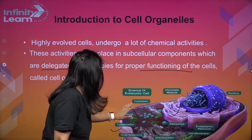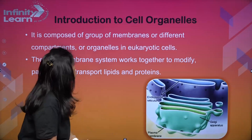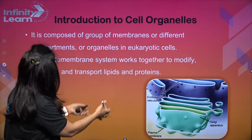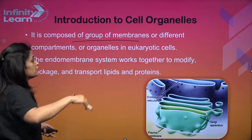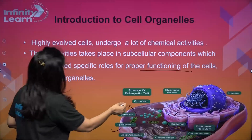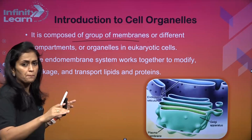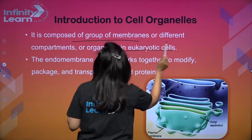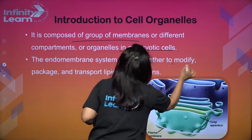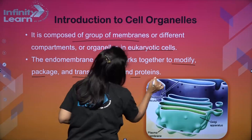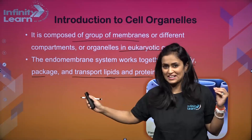From the Golgi apparatus, it has to be sent out. So there must be an interlink between them, and that, my dear student, makes up your endomembrane system. It is composed of a group of membranes of different compartments — from here to here to here. These different compartments are present in eukaryotic cells only, and they work for modification, packaging, and transportation of lipids and proteins. They are responsible for all of these end-to-end services.